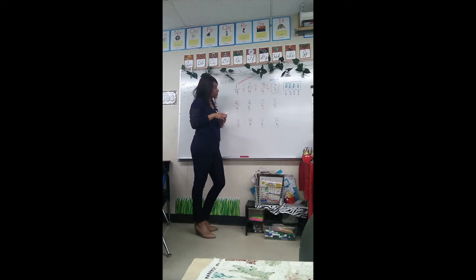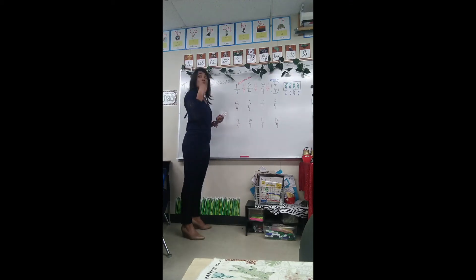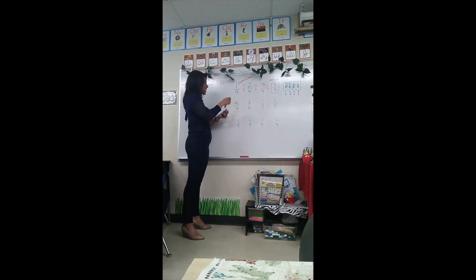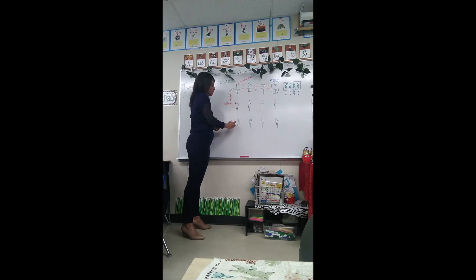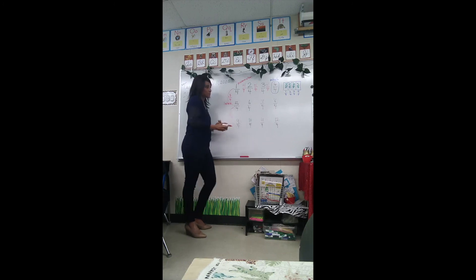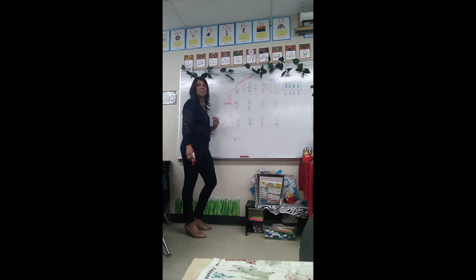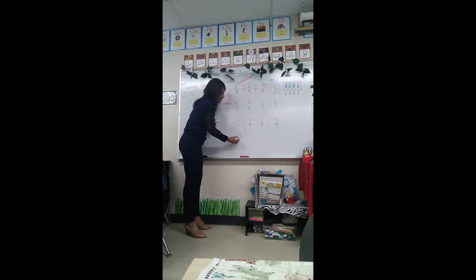Going down the columns — adding one whole. What's another way to say one whole? Four-fourths. We're adding four-fourths going down. Five-fourths plus four-fourths would be nine-fourths — yes! So what would go here? Thirteen-fourths. Awesome.